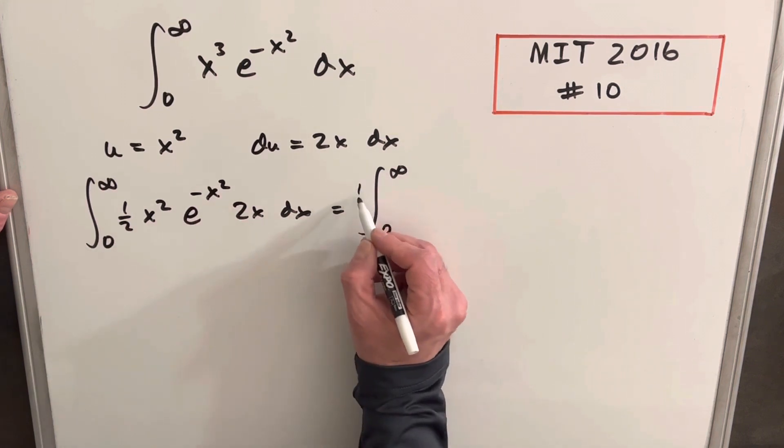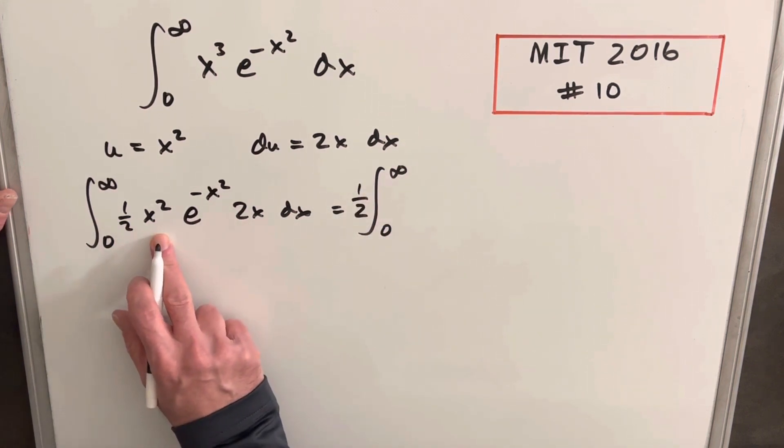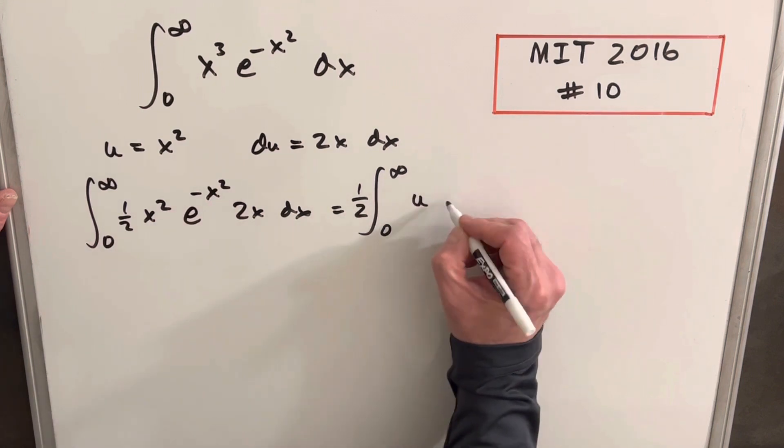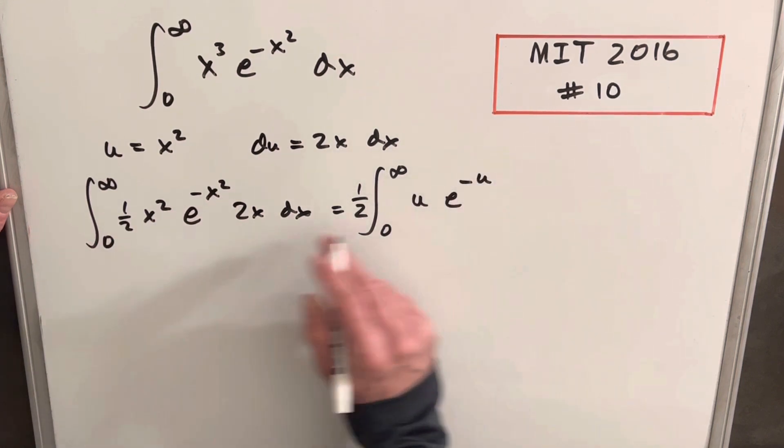I'm going to take this half up front, and then x squared is u, e to the minus u, and then this piece here is our du.